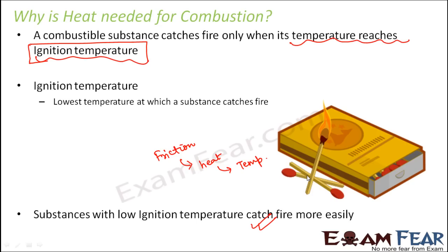You might ask: is the matchstick a combustible substance? Of course! If you look at the head of the matchstick, one of its most important constituents is phosphorus, which is highly reactive and reacts very violently with air to catch fire. Small amounts of sulfur and potassium chloride are also present. We will discuss exactly how the matchstick works a little later. For now, just understand that heat is important for combustion.